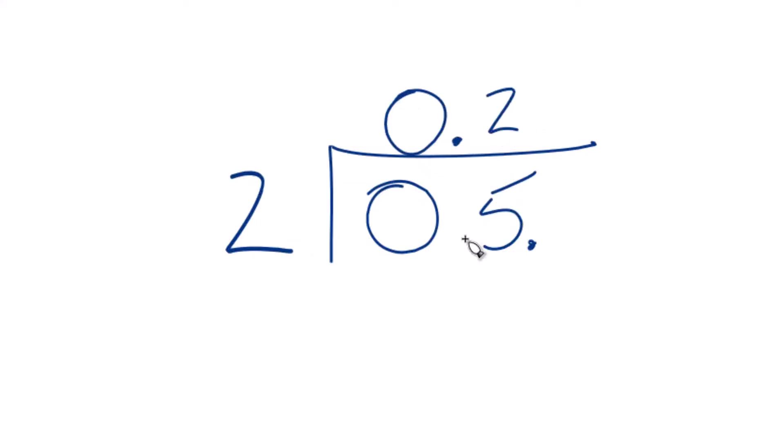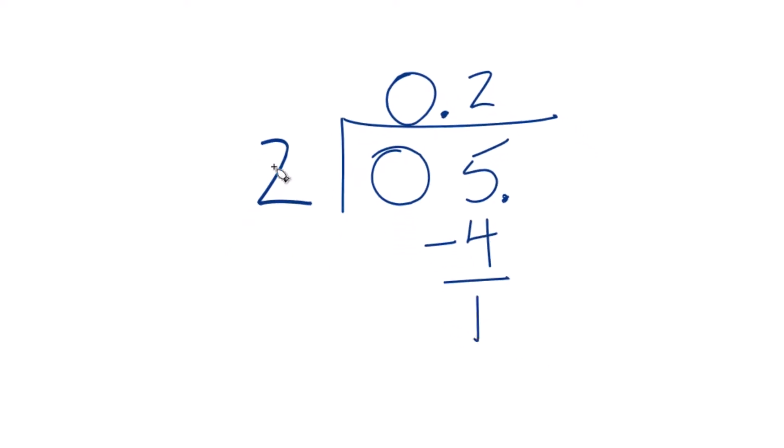Now 2 times 2, that's 4. Subtract, we get 1. 2 doesn't go into 1, but if we move over a decimal place, we'll call this 10. 5 times 2, that's 10.